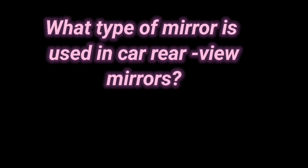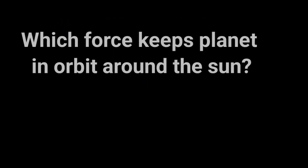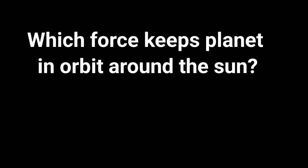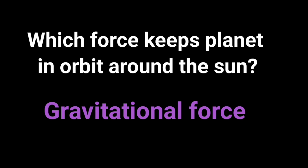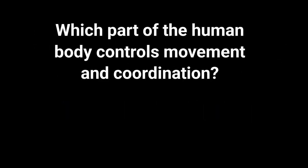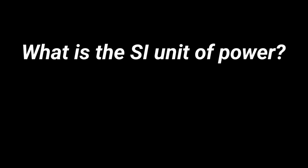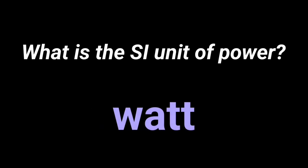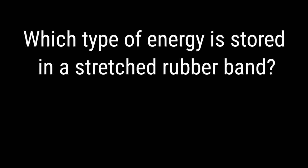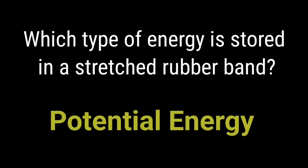What type of mirror is used in car rear-view mirrors? Convex mirror. Which force keeps planets in orbit around the sun? Gravitational force. Which part of the human body controls movement and coordination? Brain. What type of energy is stored in a stretched rubber band? Potential energy.